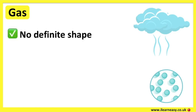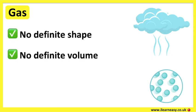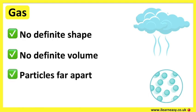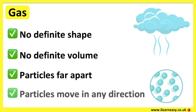Gases have no definite shape or volume. The particles in a gas have a lot of space between them and are arranged in a random way. The strength of the bonds between the atoms are weak. Therefore, the particles are free to move in any direction, and they have high kinetic energy. A gas changes shape according to the container that it's in. The particles in a gas spread out to fill large containers.